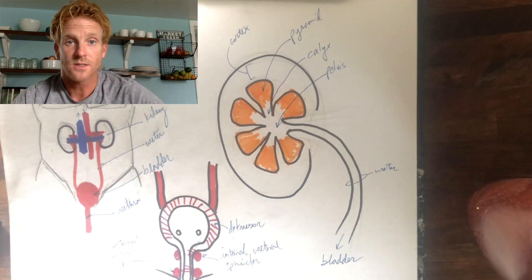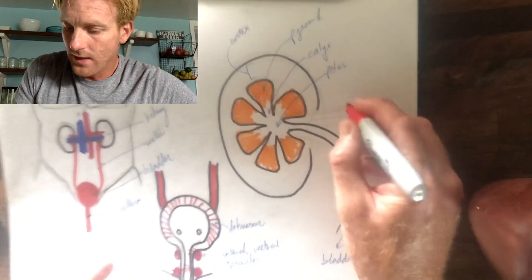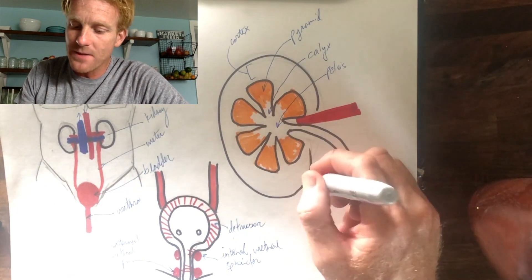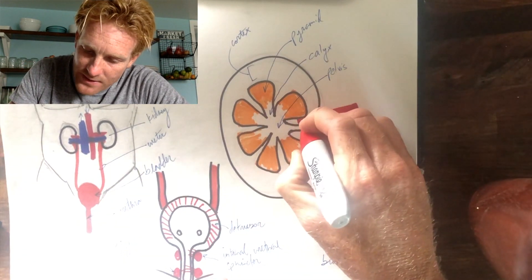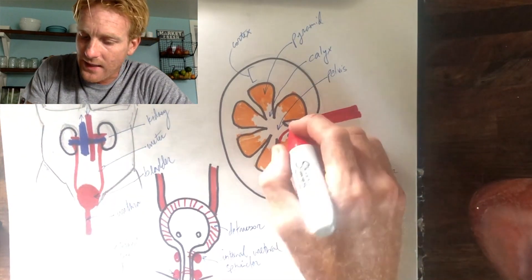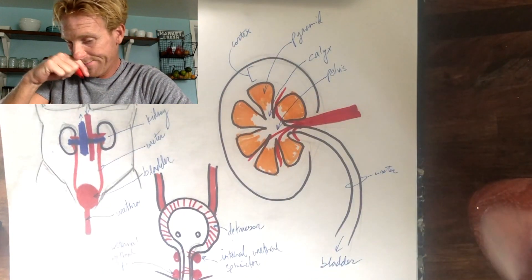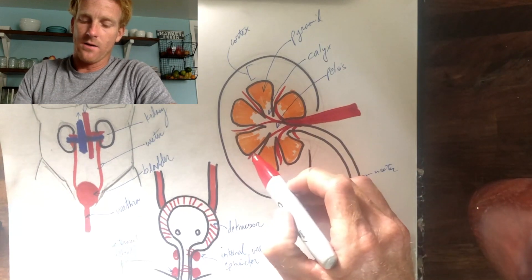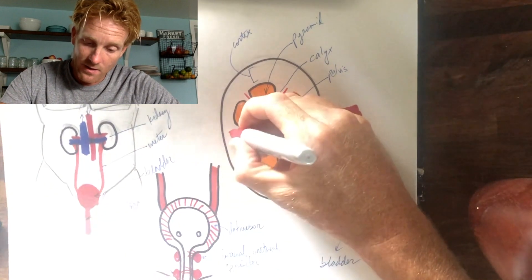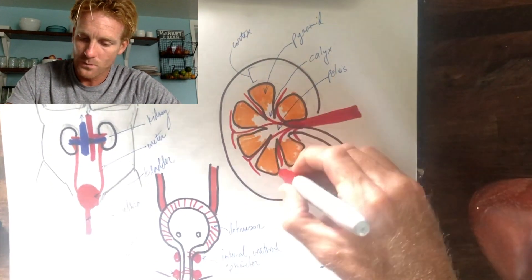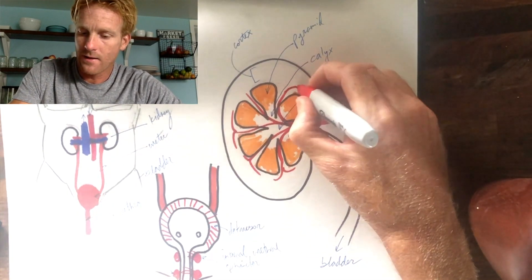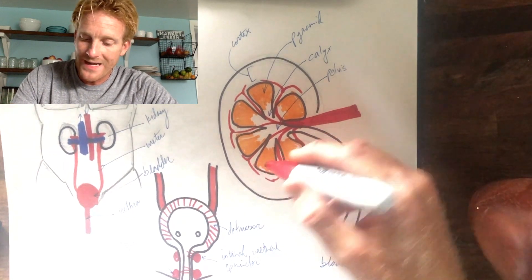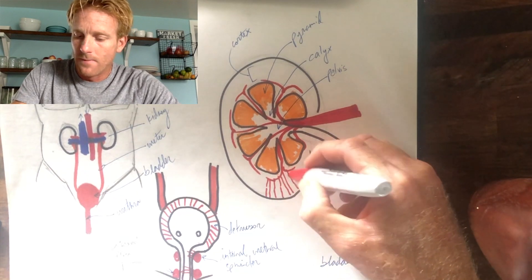To get blood into the top of each pyramid, a large renal artery sends blood into the kidney. It divides into smaller segmental arteries, which make their way between the pyramids. These become interlobar arteries, then arcuate arteries that arc outward, and finally very small cortical radiate arteries that migrate out into the cortex.